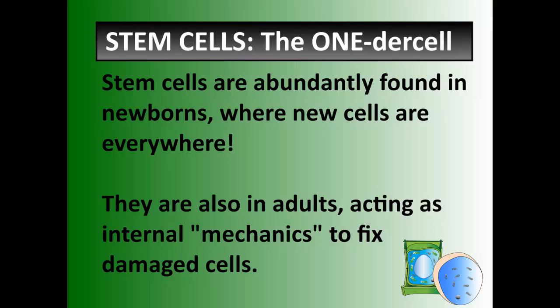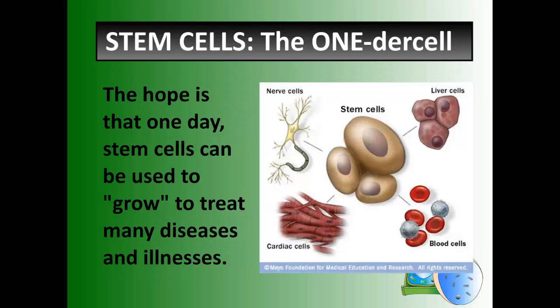Stem cells are abundantly found in newborns, where new cells are everywhere, especially in the umbilical cord. We have them as adults too, but they act as internal mechanics — they fix some damaged cells. We don't have as many stem cells when we're adults, but they are there still to fix damaged cells. The hope is that one day we could take stem cells and make new liver cells, new blood cells, new heart cells, new nerve cells for the brain, maybe even new pancreas cells or new lung cells, to combat things like cancer or treat illnesses and disease.